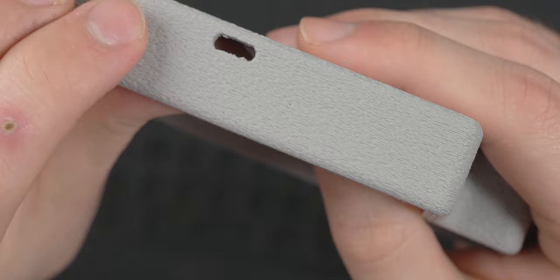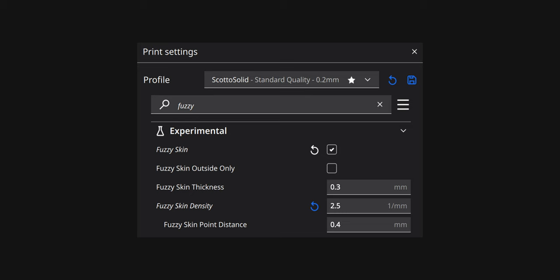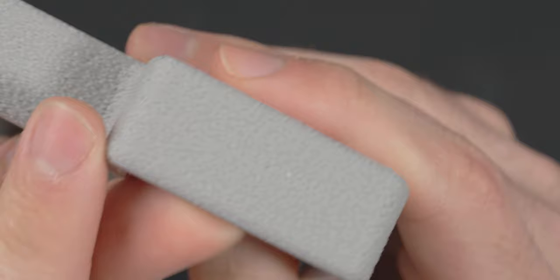Let's first start by looking at the case here. I want to bring attention to this texture I have on here, which is the fuzzy skin setting inside Orca. This is something I started doing with a lot of my boards and especially the keycaps, which I'll show you later in this video. It just hides the layer lines really nicely. This is a matte filament, so it really hides them nicely. It gives it this nice concrete texture with this filament that I'm using.